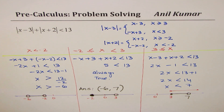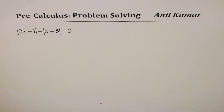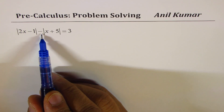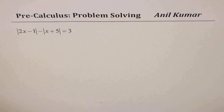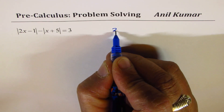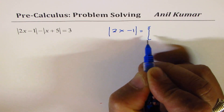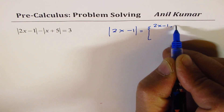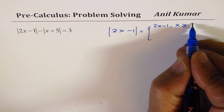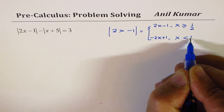Now let's move on to the equation: |2x − 1| − |x + 5| = 3. I'd like you to pause the video, attempt this question, and then check against my solution. The first step, as before, is to rewrite each absolute function as a piecewise function. |2x − 1| equals 2x − 1 when x ≥ 1/2 (since x = 1/2 makes it zero), and −(2x − 1) = −2x + 1 when x < 1/2.